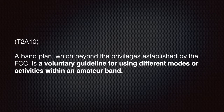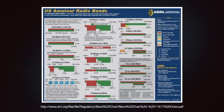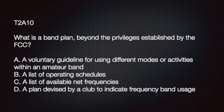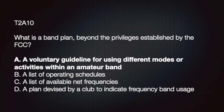We need to know what a band plan is. A band plan, beyond the privileges established by the FCC, is a voluntary guideline for using different modes or activities within the amateur band. If you search for the ARRL band plan on the web, you'll find a downloadable PDF — an excellent reference to keep handy. The exam answer is A, a voluntary guideline for using different modes or activities within the amateur band.